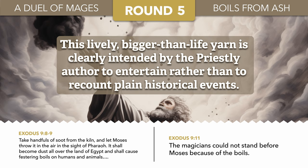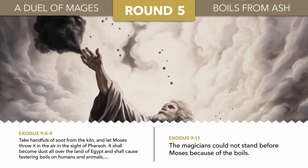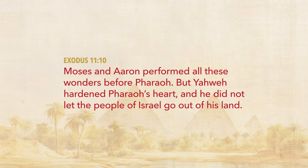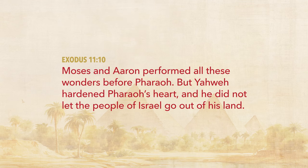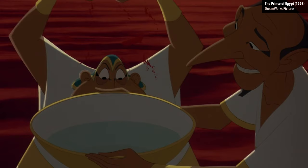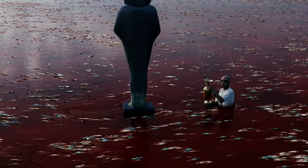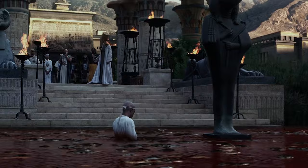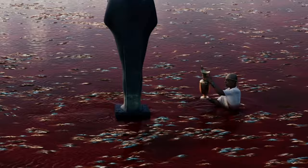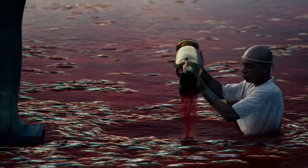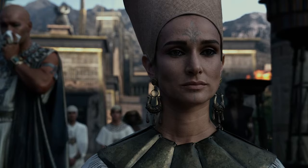The Priestly contest of magicians concludes in 11:10, setting up the final confrontation and escape across the Red Sea: 'Moses and Aaron performed all these wonders before Pharaoh, but Yahweh hardened Pharaoh's heart, and he did not let the people of Israel go out of his land.' Interestingly, none of the films about the plagues of Egypt depict this contest as described in Exodus — they usually either just reveal the Egyptian magicians as frauds, or skip the contest of magicians altogether. It's sad that biblical films so often change or omit the most interesting details.